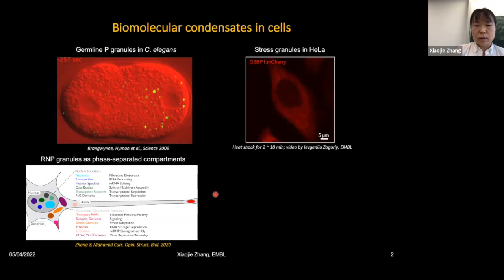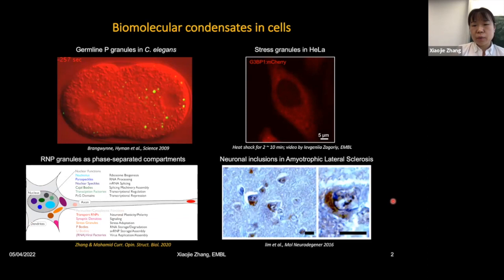In recent years, more types of biomolecular condensates have been discovered. They have multiple functions ranging from cell signaling to transcriptional regulation in diverse cell types. Interestingly, components of biomolecular condensates are also related to neurodegenerative diseases. For example, in patient neural cells, the stress granule component FUS actually forms cytoplasmic inclusions as shown by immunohistochemistry staining. Understanding the molecular basis for the assembly and dynamics of biomolecular condensates and how they relate to disease development is very important.